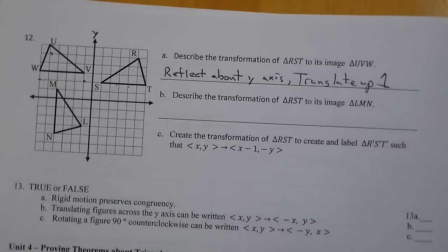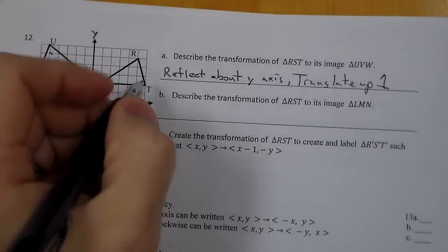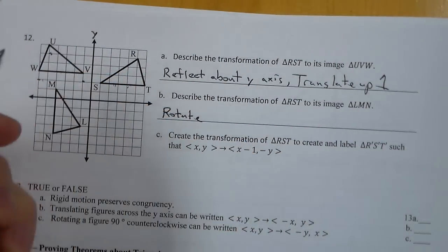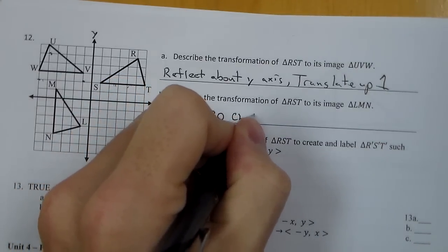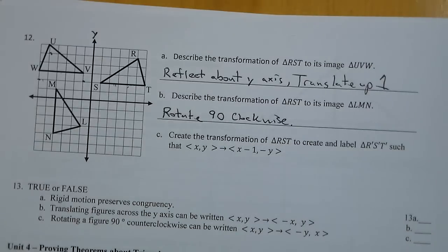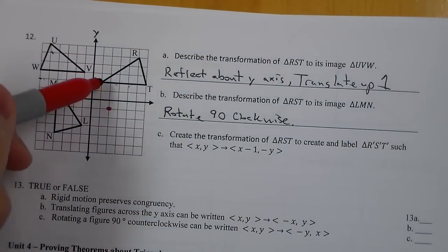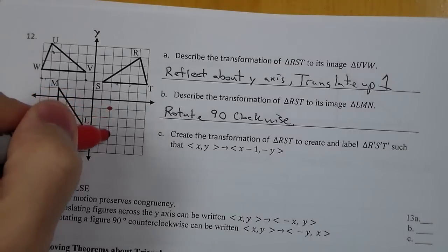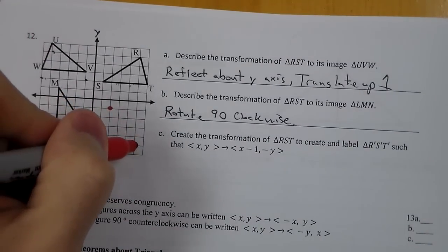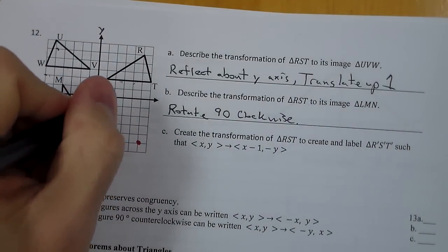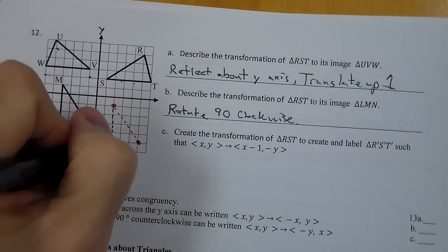Next one, RST to LMN. I first noticed it's kind of facing the different direction. So I'm going to first rotate RST about the origin. I'm going to go 90 degrees clockwise. And when I do that, S comes to here. Then it goes from S to T. It's 5 units, so that's here. And then R would have been there. So this is RST rotated, 90 degrees clockwise about the origin.